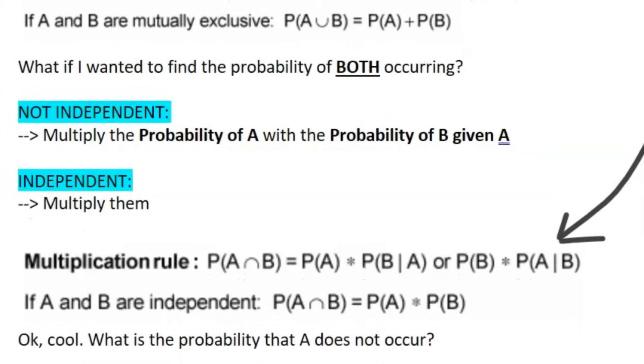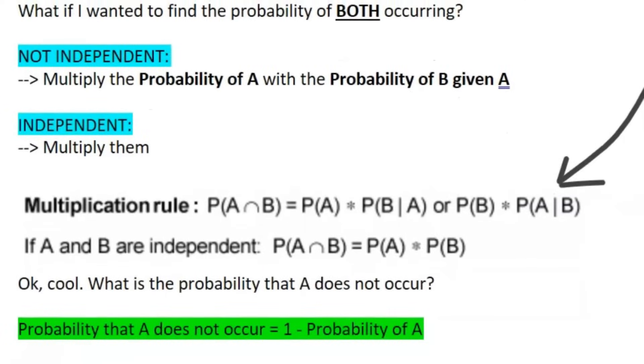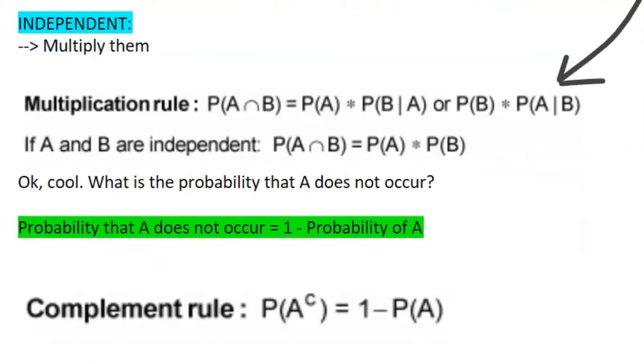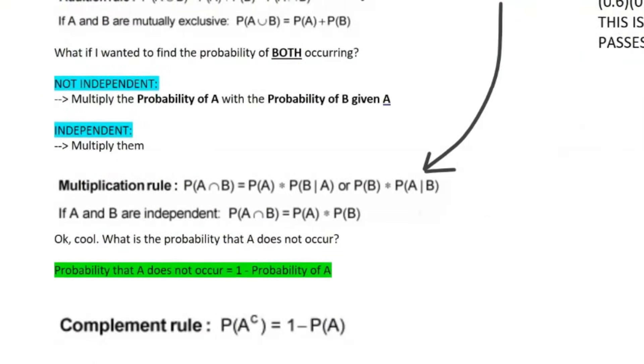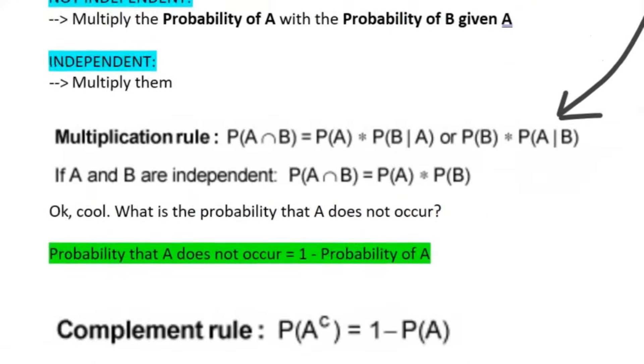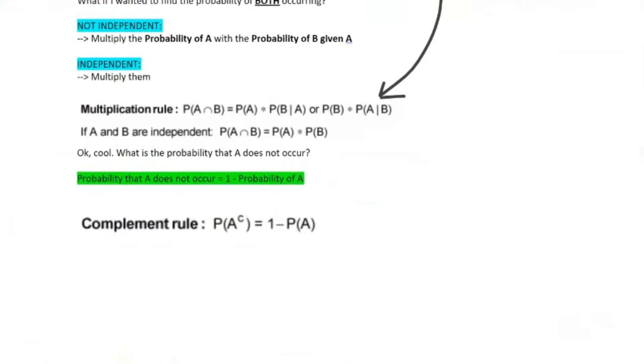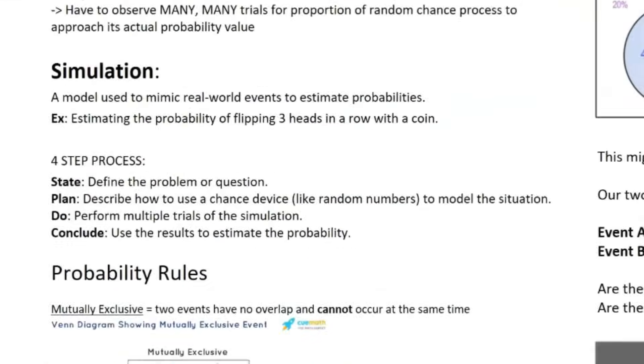But now let's talk about the complement rule. So what is the probability that A does not occur? Well, the probability of A not occurring is just one minus the probability of A. That's given as a complement rule on your reference table as well. Actually, I'm not sure if this one's on your reference table or reference sheet. So make sure you check that one.